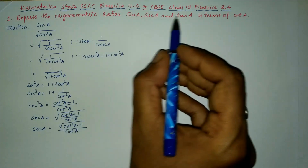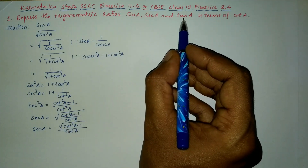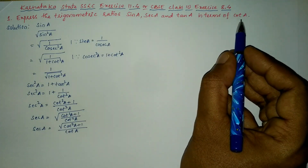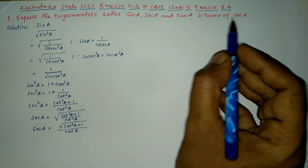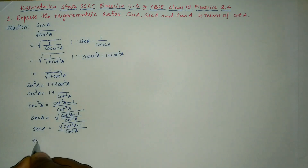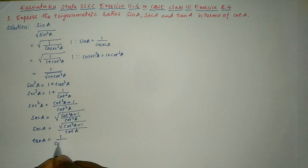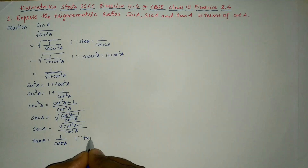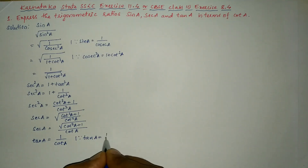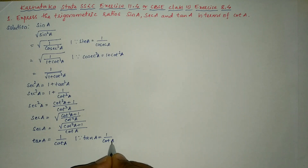Now let us convert tan a in terms of cot a. tan a equals 1 divided by cot a, because tan a is equal to 1 divided by cot a.